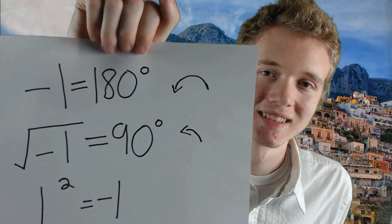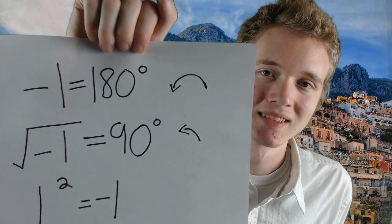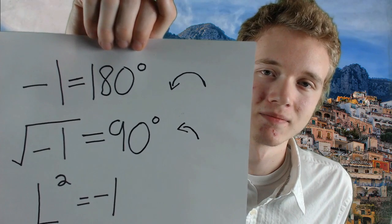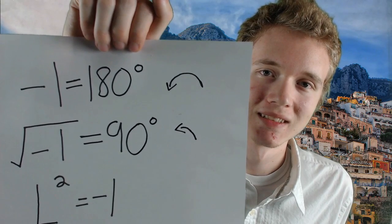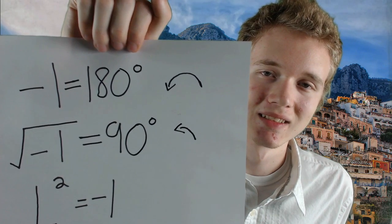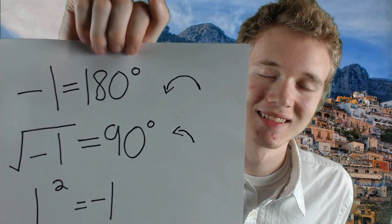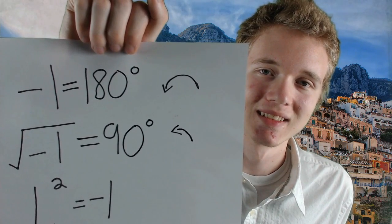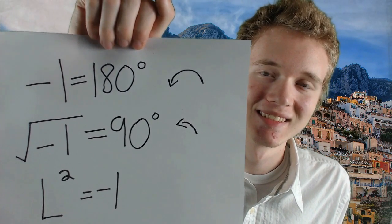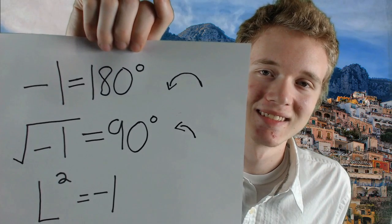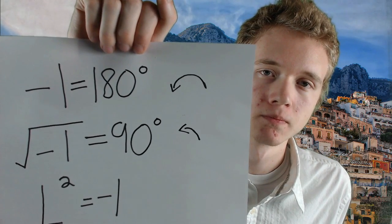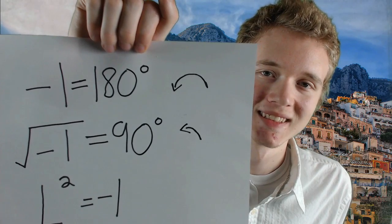If you turn 90 degrees twice, it is the same thing as multiplying by the square root of negative 1 twice, which equals negative 1, or 180 degrees. If you multiply by L three times, you end up turning to your right, or 270 degrees, which is 3 quarters of a turn. If you multiply L four times, it is the same thing as turning 360 degrees, or one full circle.